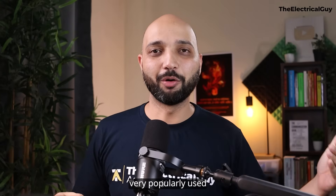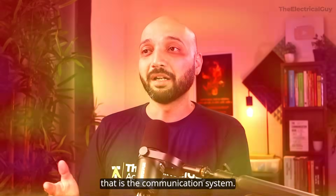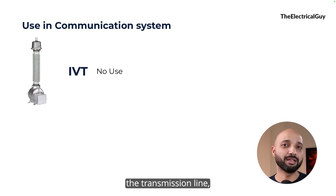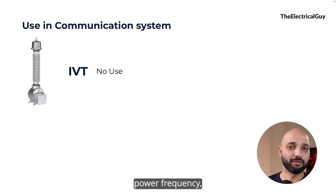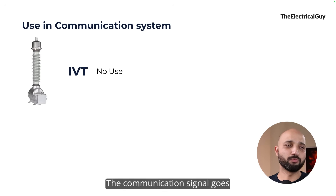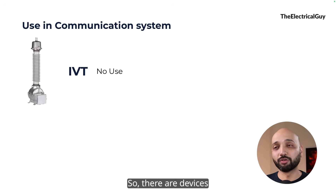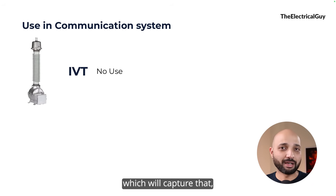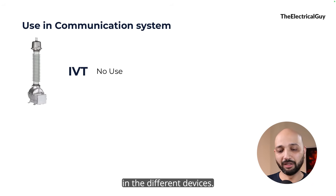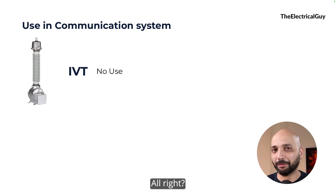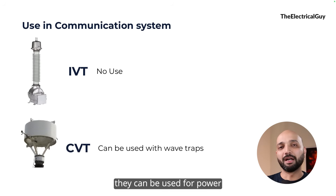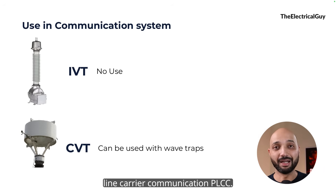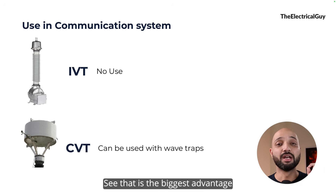The last and most important point — and the reason CVTs are very popularly used in high voltage applications — is their role in communication systems. Transmission lines not only transmit power but can also carry communication signals at very high frequencies, around 500 kHz, compared to the power frequency of 50 to 60 Hz. IVTs play no role in this function, but CVTs, when coupled with wave traps, can be used for power line carrier communication — PLCC. This is the biggest advantage CVTs offer.